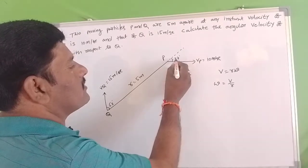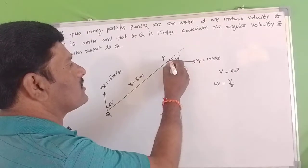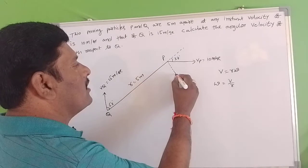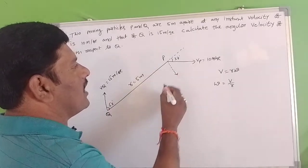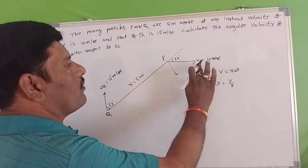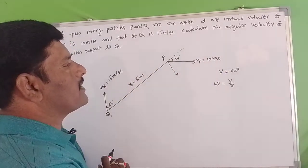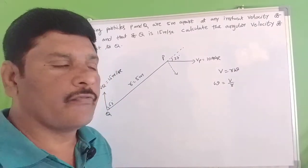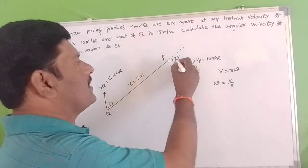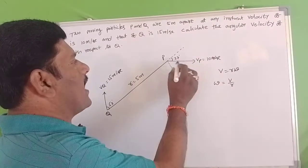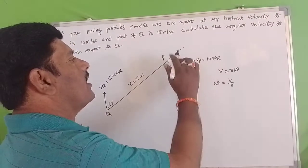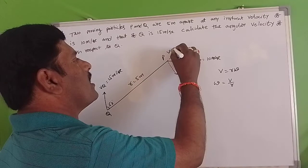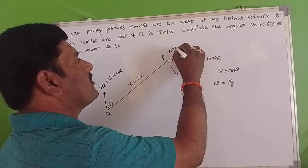The velocity perpendicular component — Vp value of 10 meters per second is at angle 37 degrees. We have V cos 37 degrees as the component along the line PQ.